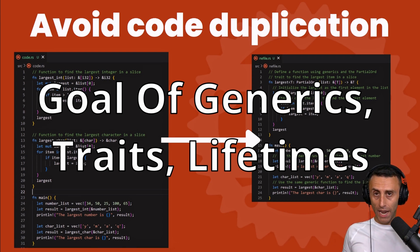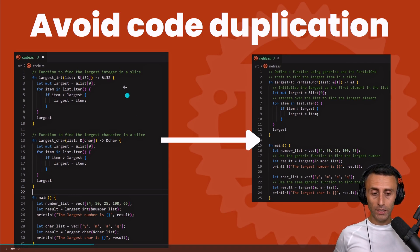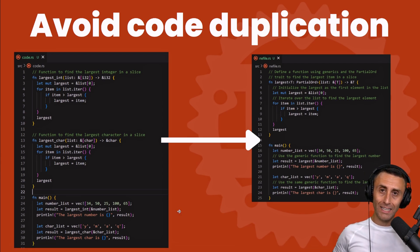What's the goal of generics, traits, and lifetimes? We want to avoid code duplication. Check the code here on the left and on the right. For example, we want a function that finds the largest integer in a slice, and then we also want a function that finds the largest character in a slice. The logic is similar, but we have a different type.